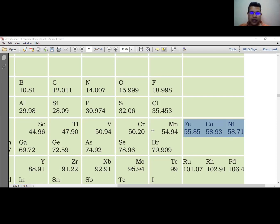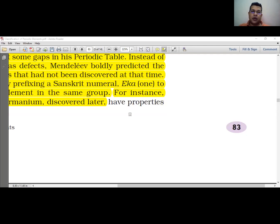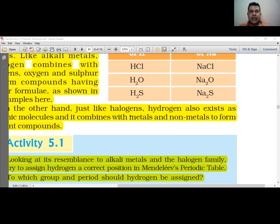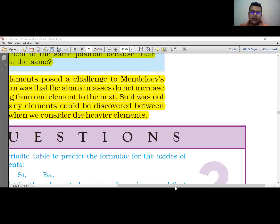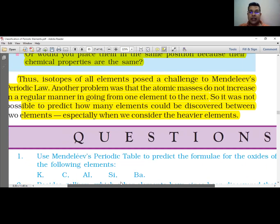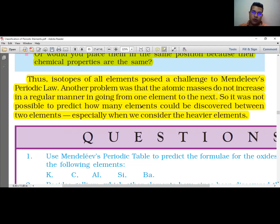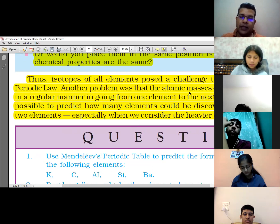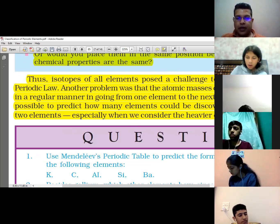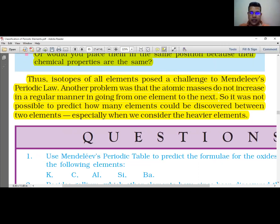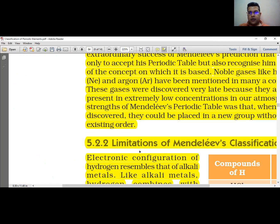Number one limitation was hydrogen's placement, second problem was positioning of the isotopes, and the third problem was that the heavier elements and the elements present between them. So this was Mendeleev's periodic table's achievements as well as the limitations. This is the portion of the limitations which I have also studied, and then I will see the questions and answers.